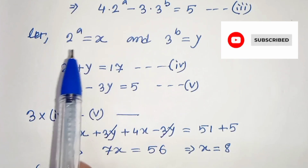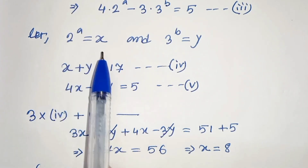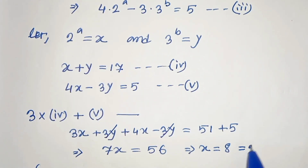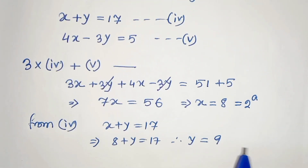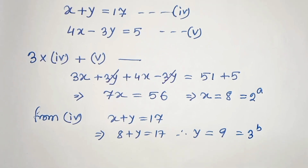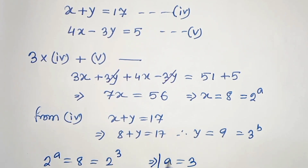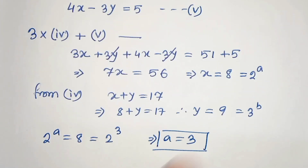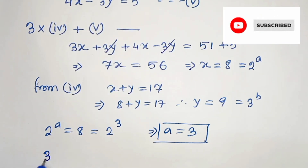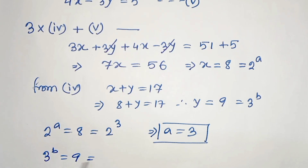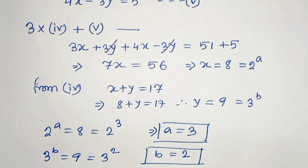Now we have considered 2 to the power a as x, and 3 to the power b as y. So here 2 to the power a equals 8, and 8 can be written as 2 to the power 3. Therefore a is equal to 3. And from y equals 9, we get 3 to the power b equals 9, which is 3 squared. Therefore b is equal to 2. Our answer is a equals to 3 and b equals to 2.